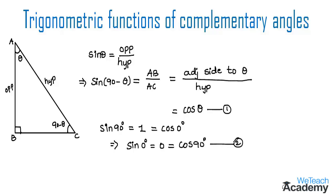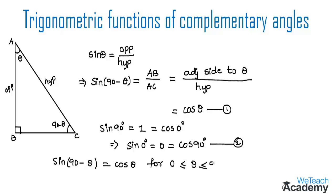From both equations 1 and 2, we can say that sine 90 minus theta is equal to cos theta for 0 less than or equal to theta less than or equal to 90 degrees. Similarly, let us find the trigonometric function for cos 90 minus theta.